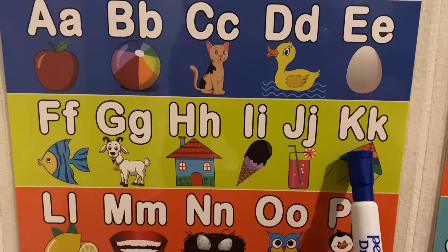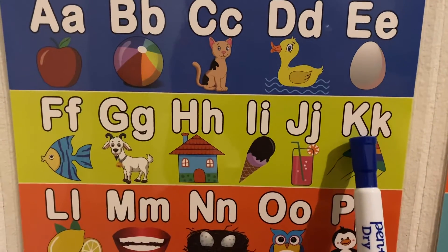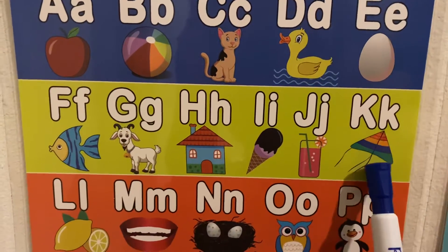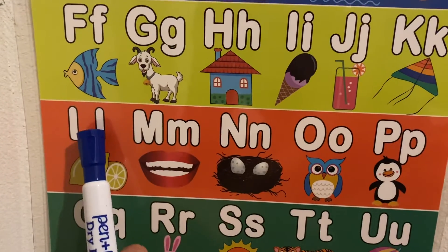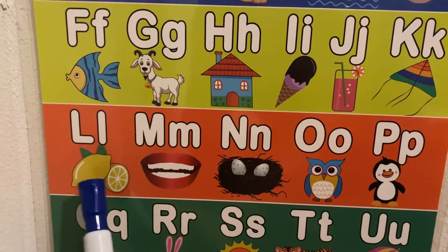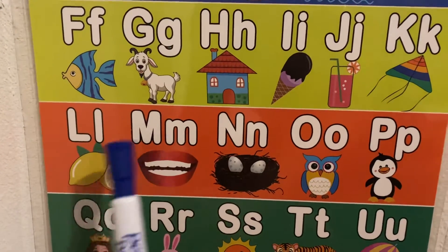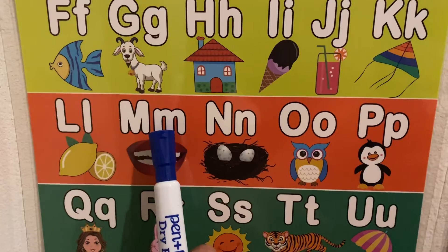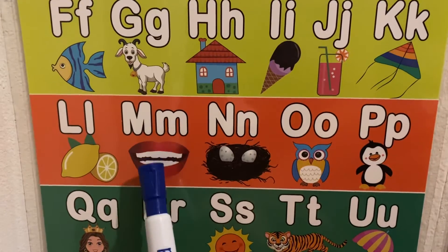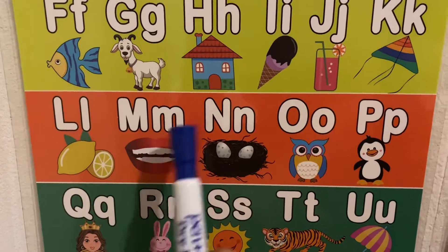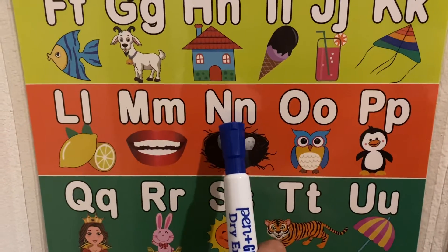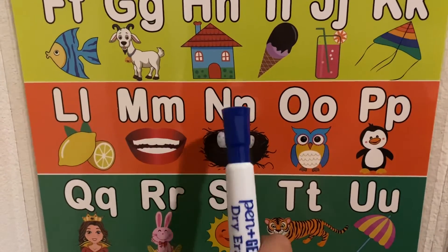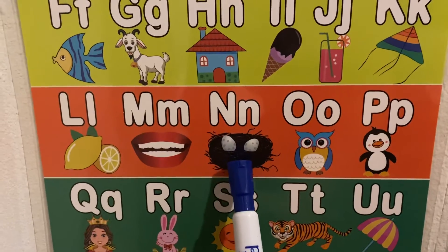K sound is K, like for kite. L sound is L, like for lemon. M sound is M, like for mouth. N sound is N, like for nest.